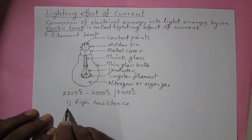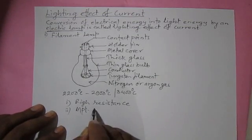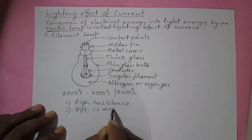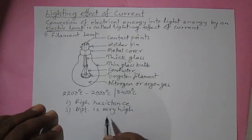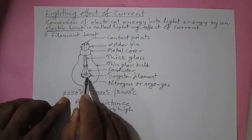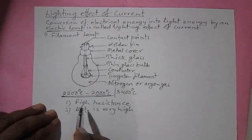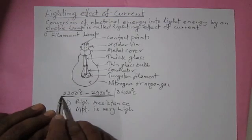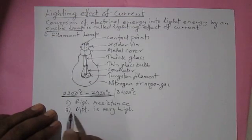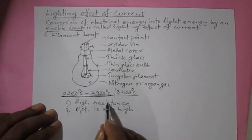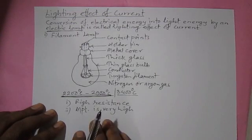The second reason tungsten is selected is that it has a very high melting point of about 3400°C. The filament has to become white hot, and many metals would melt at that temperature. So we select a metal that does not melt even in white-hot conditions — tungsten, which does not melt at these temperatures.